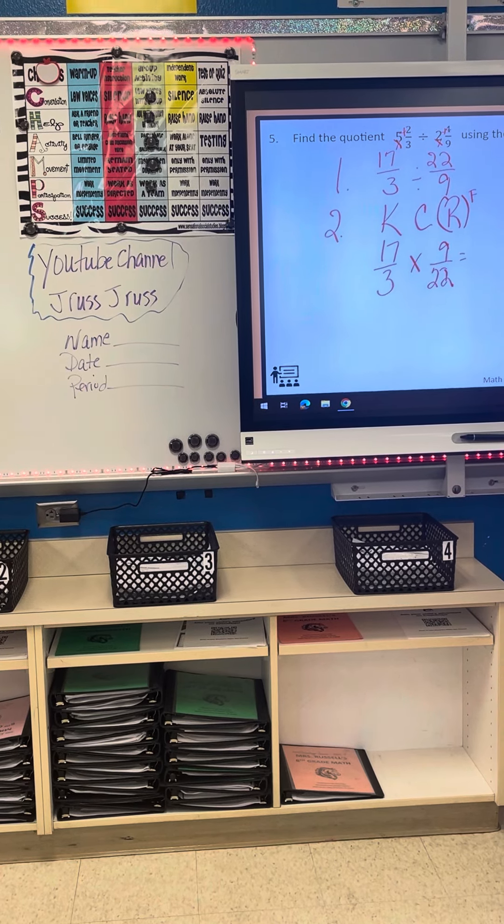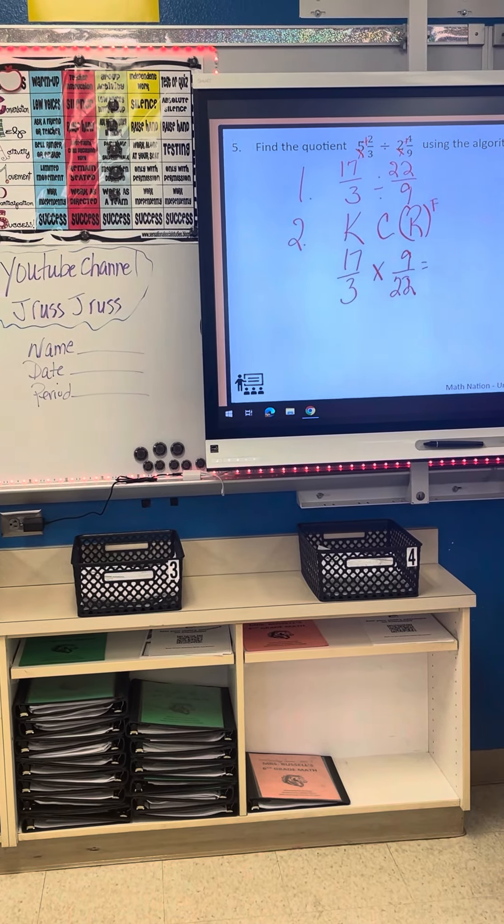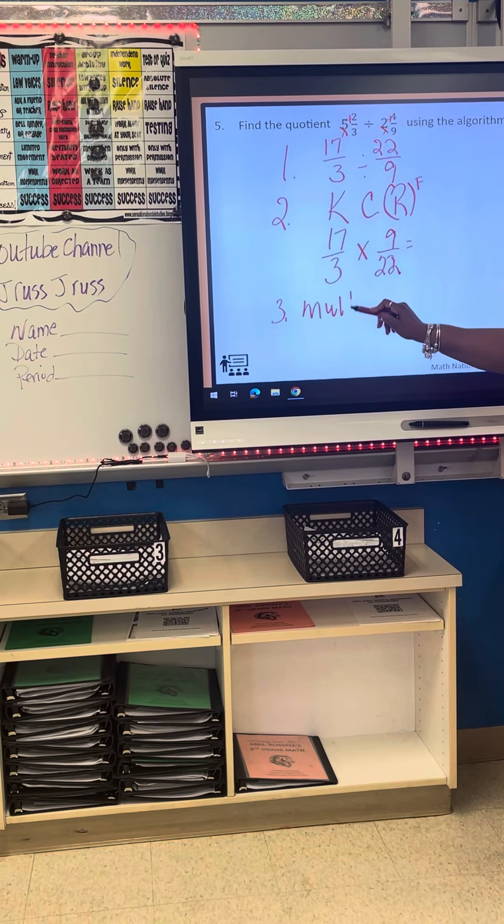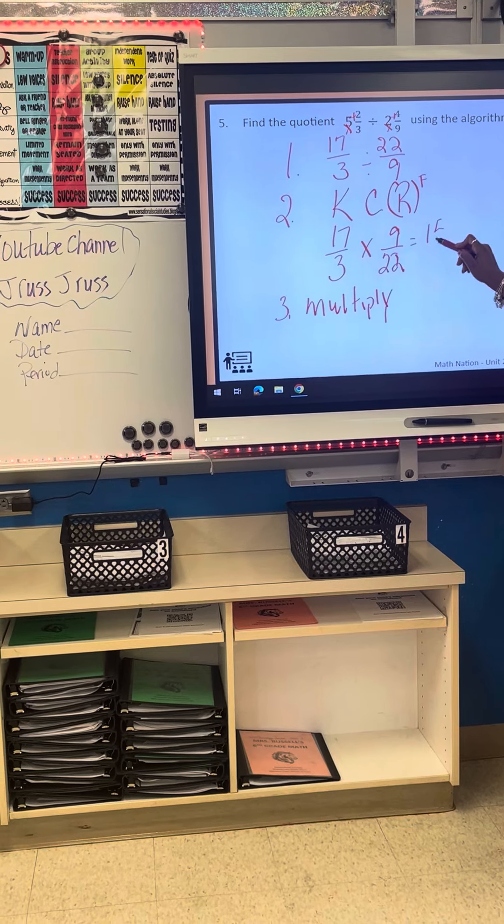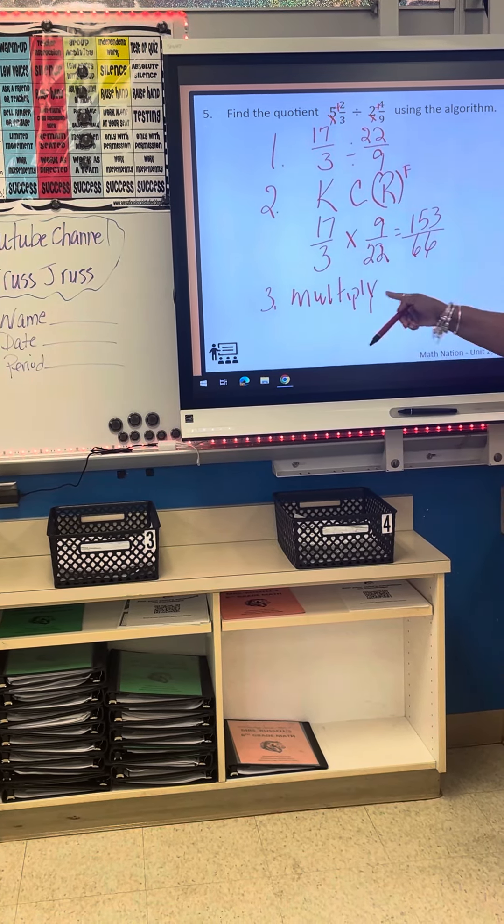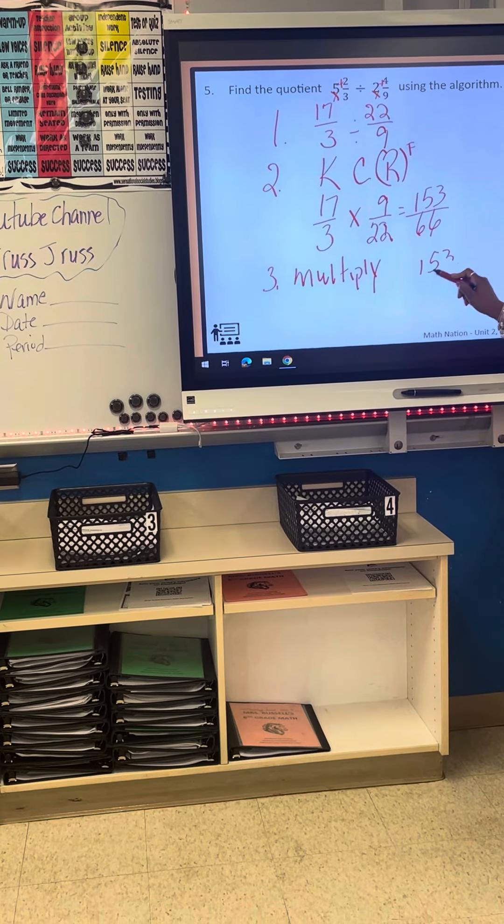Now, what's the problem? Seventeen times nine is one hundred fifty-three. The third step means I multiply. And what's three times twenty-two? Sixty-six. So I multiplied it, and I got this.